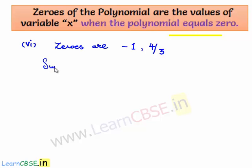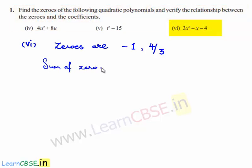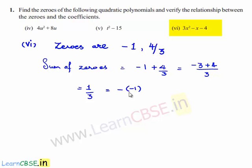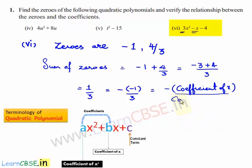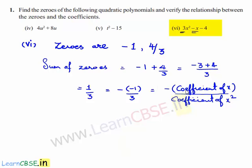The sum of the zeros is equal to minus 1 plus 4 by 3. Taking LCM as 3, this gives minus 3 plus 4 which is 1 by 3. This can be written as minus of minus 1 divided by 3, where minus 1 is the coefficient of x and 3 is the coefficient of x squared. So the sum of zeros is equal to minus of coefficient of x divided by coefficient of x squared.